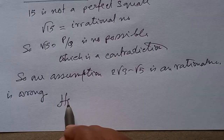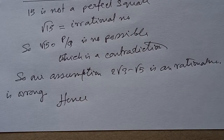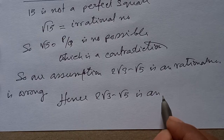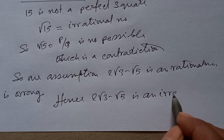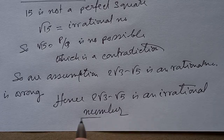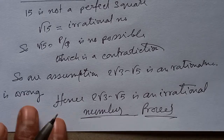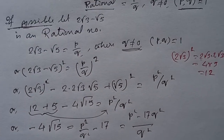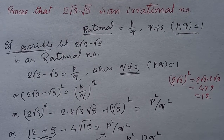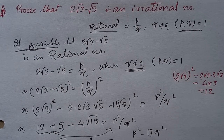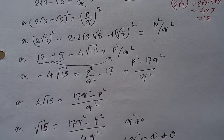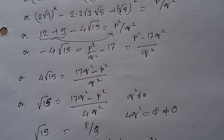Hence, 2√3 - √5 is an irrational number. Thank you.